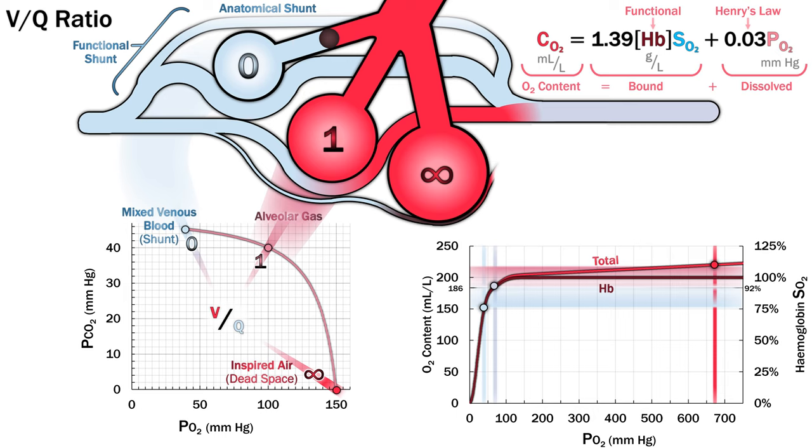What happens when we give 100% supplemental oxygen? On the horizontal axis, the partial pressure for the VQ unit with a VQ ratio of 1 has shot up to almost 700, but with only a marginal increase in oxygen content due to the dissolved oxygen, because the saturation is 100%. The mixed venous is the same, so there's only a marginal increase in the final saturation from 87% to 92%, despite 100% inspired oxygen.